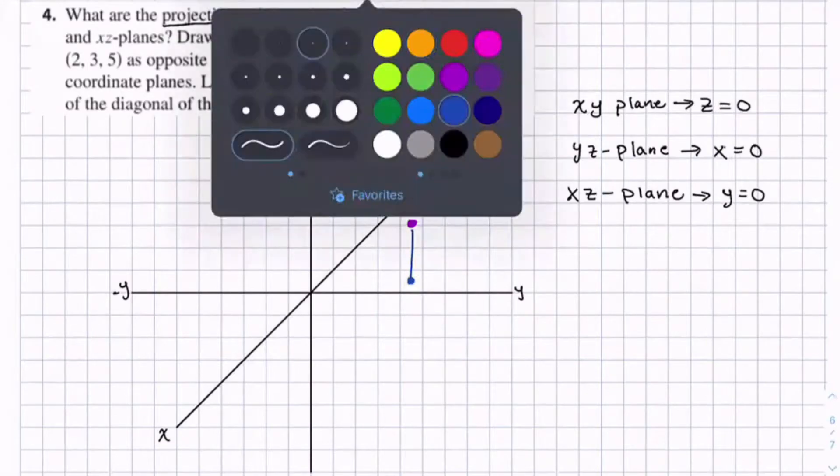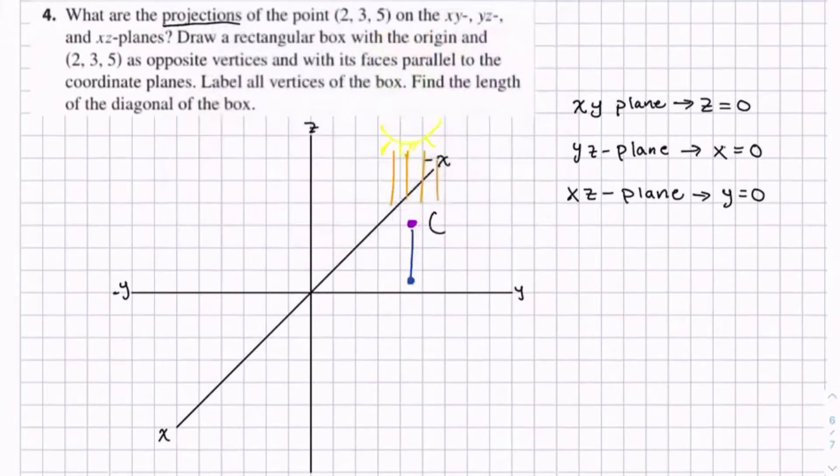And notice in the xy plane, let's say this point was just eyeballing, let's say it's like 2, 4, 3. The xy plane would be 2, 4, 0.